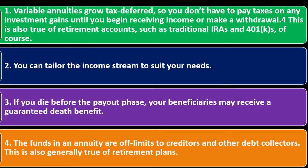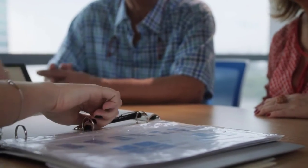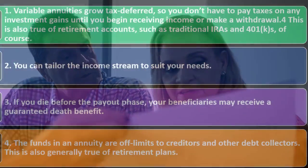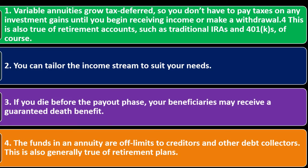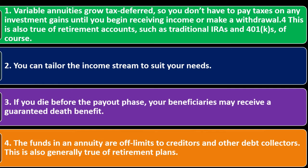When annuities overlap with insurance and investment goals, it can get confusing. Ideally, you want to buy the specific thing you're trying to buy — if it's life insurance, buy life insurance; if it's retirement savings, buy retirement savings products. That overlap can be confusing. Advantage number four: the funds in an annuity are off-limits to creditors and other debt collectors, which is also generally true of retirement plans.